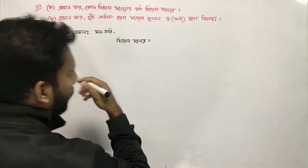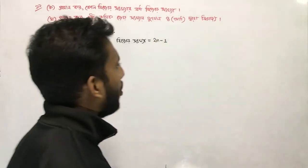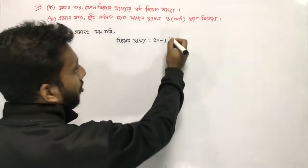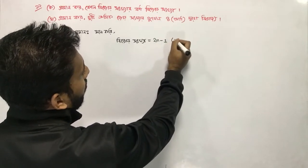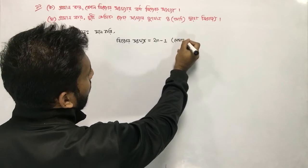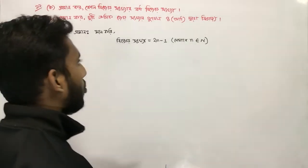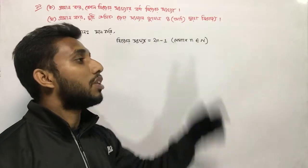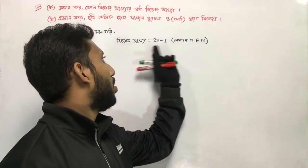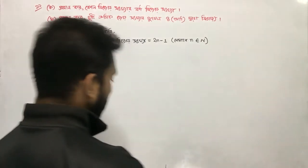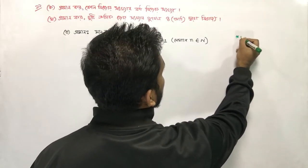This is equal to 2n minus 1. So this is 2n minus 1. So this is 2n minus 1. Important: 2n minus 1.